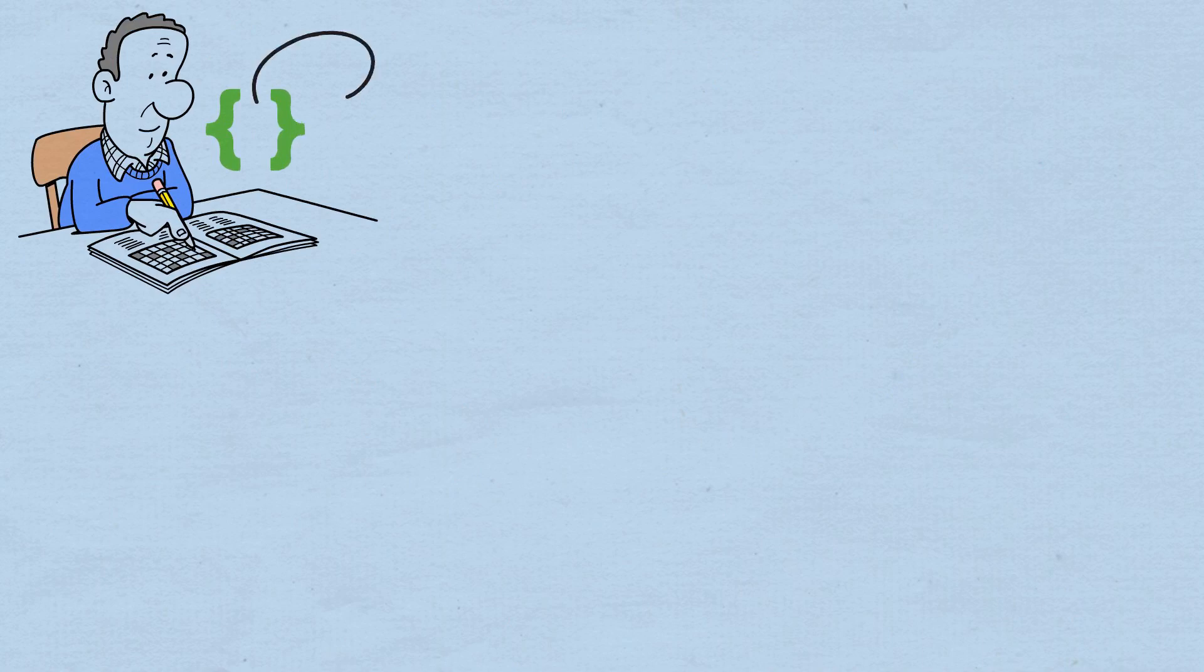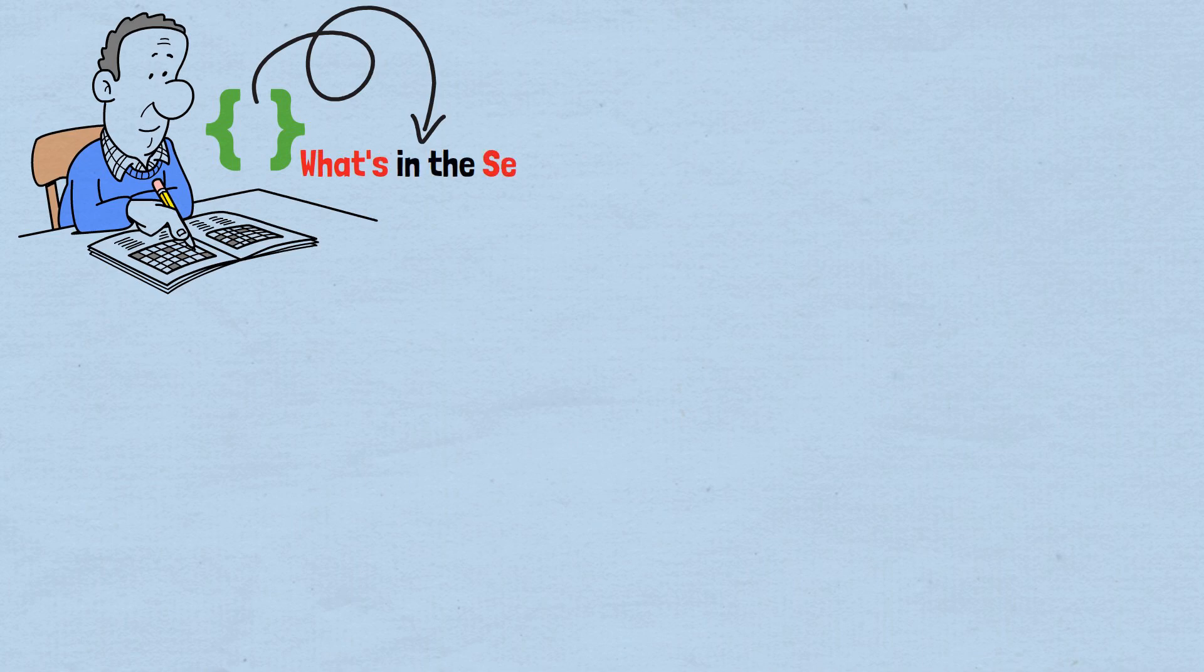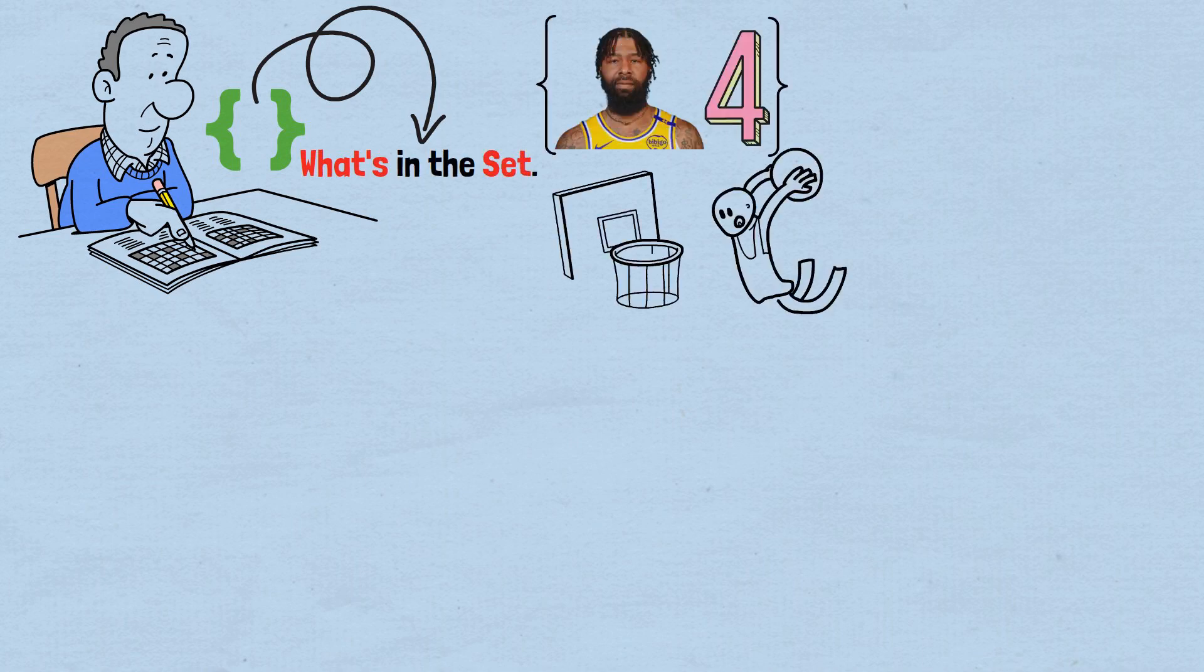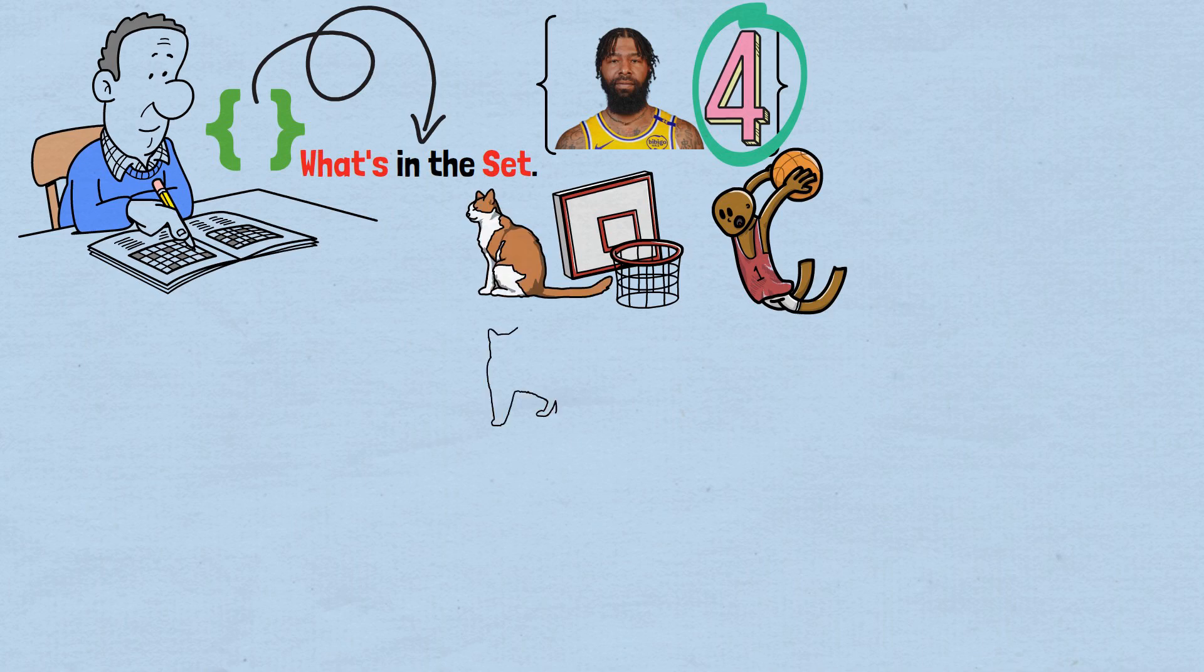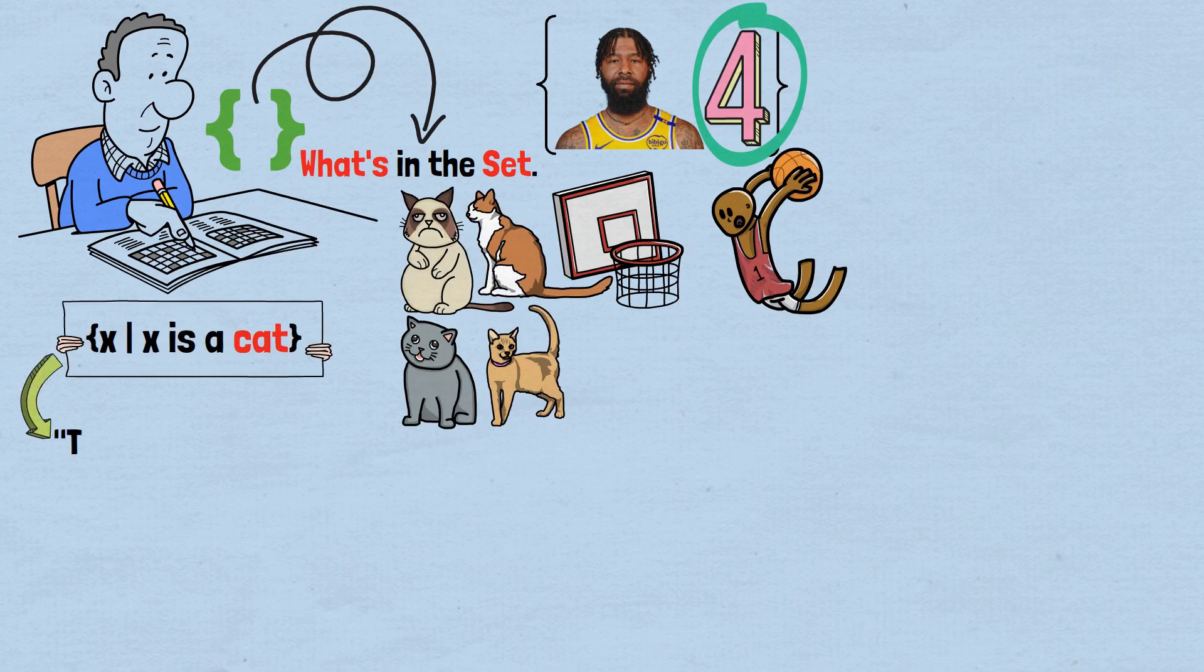When mathematicians write about sets, they use curly braces, curly brackets. Everything inside these brackets represents what's in the set. So, {LeBron James, 4} is the set containing a basketball player and the number four. For larger sets, like the set of all cats, we use set builder notation. {X | X is a cat}. Read as, the set of all X, such that X is a cat.